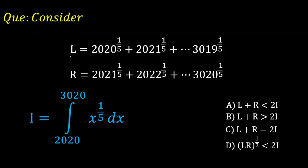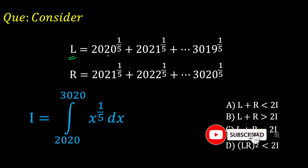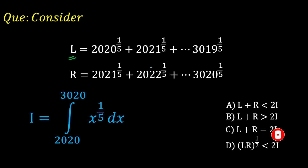Today's question involves L, defined as the fifth root of a series from 2020 to 3019, and R, defined as the fifth root of another given series. I is the integral from 2020 to 3020 of x^(1/5) dx. We need to determine which relation holds among L, R, and I.